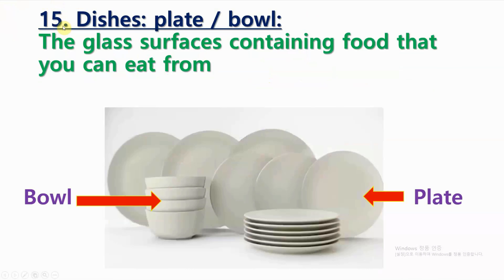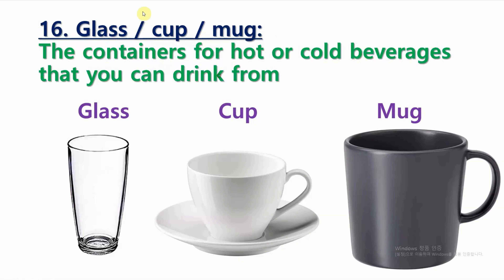Number 15: Dishes, such as plate or bowl. The surfaces containing food that you can eat from. Number 16: Glass, or cup, or mug. The containers for hot or cold beverages that you can drink from.